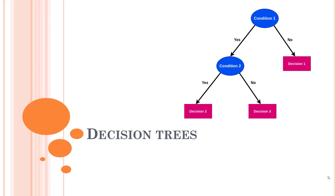We looked into some key points needed for decision trees: internal nodes represent the features of the dataset, branches represent the decision rules, and each leaf node represents the outcome.